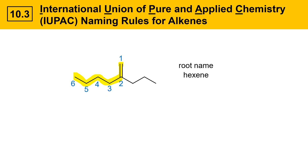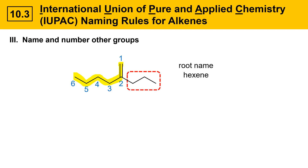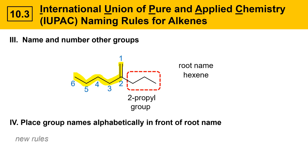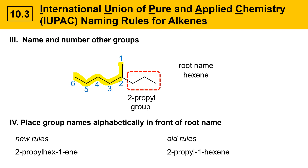The next step is to name and number the other groups that might be on that chain. In this case we have a group attached to the number two position — this is a 2-propyl group. At this point the naming is just like it is for alkanes, where you place groups alphabetically in front of the root name. Under the new rules the result is 2-propyl-hex-1-ene, and under the older rules it would be 2-propyl-1-hexene.